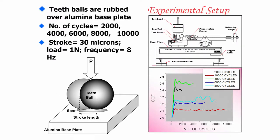We have not only done mechanical and microstructural characterization but also fretting wear studies on natural teeth. We prepared a 'teeth ball' by taking natural teeth and slightly polishing the external surface to give it a ball shape. This ball was used as the counter body, with alumina as the base plate — because alumina has been widely investigated as a material for all-ceramic dental implants, along with zirconia.